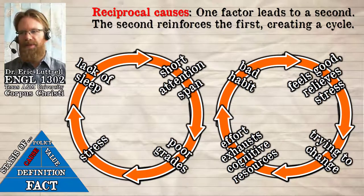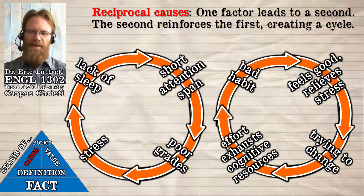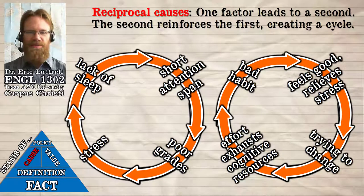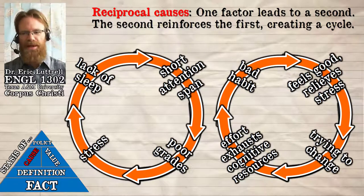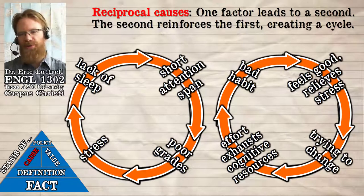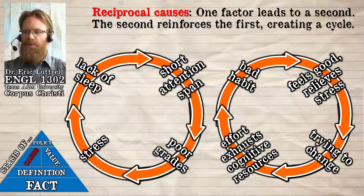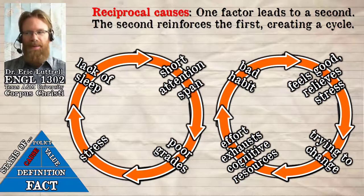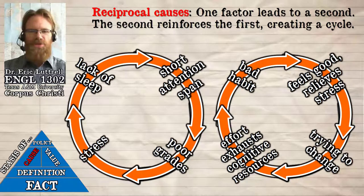There are many of these feedback loops. If you don't get enough sleep, that causes a short attention span the next day, which causes poor grades, which causes stress, and stress makes it harder to sleep, causing even shorter attention span and poorer grades. Any bad habit feels good at the time — eating the wrong foods, spending too much time playing video games — but they help relieve stress. When you try to change those things, the effort exhausts your cognitive resources, makes you feel drained, and makes you want to return to the bad habit to feel good, making change even more difficult.